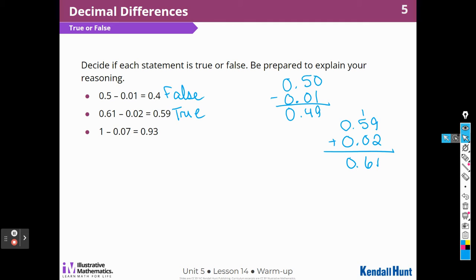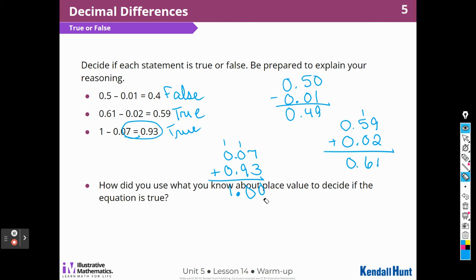I didn't even have to subtract that time. I'm going to use the same strategy for this one. I'm going to add these two together and see if I get 1. So 0.07 and 0.93. 7 plus 3 is 10, 9 plus 1 is 10. And I have a 1, and I have to make sure I make a nice, dark decimal point there. So yes, that one is true as well.